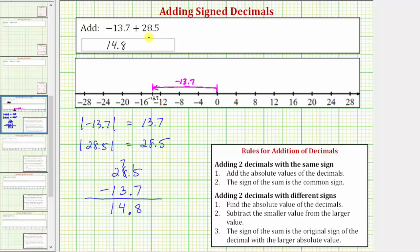And then from here, because we're adding positive 28.5, we move right 28.5 units.